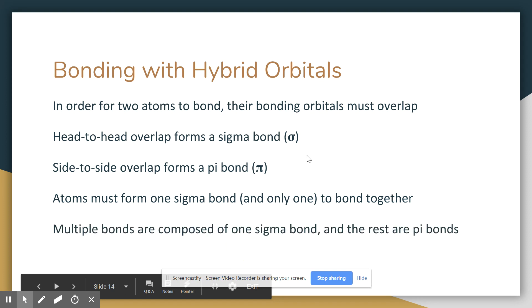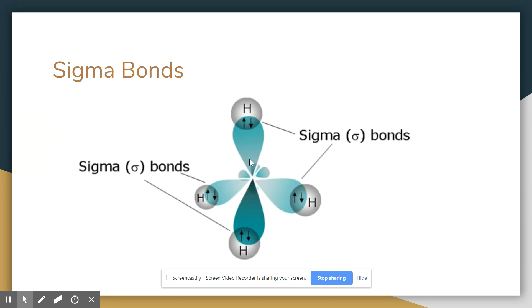If you have a multiple bond, like a double or triple bond, they're always composed of one sigma bond and then the rest are pi bonds. So, here's methane. Carbon with its hybridized sp3 orbitals here, hydrogen only has the one electron and the one orbital, so it doesn't mix, it doesn't hybridize. It just overlaps here to form a sigma bond, a sigma bond, a sigma bond, and a sigma bond. That's head-to-head overlap, right?